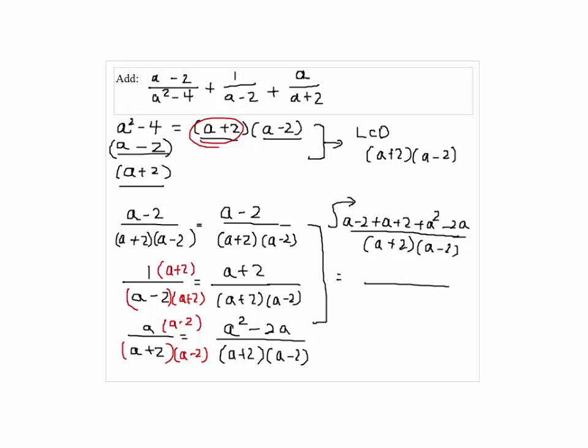Now we can simplify the numerator by combining like terms. So a squared, and a terms are gone, and 2 also canceled out, so we just have a squared on top.